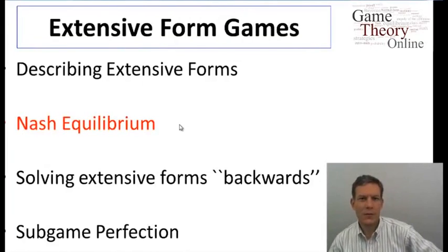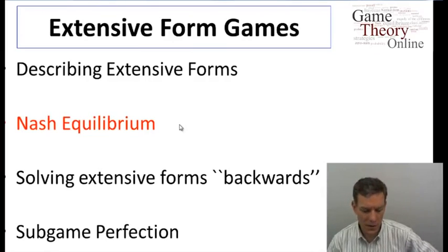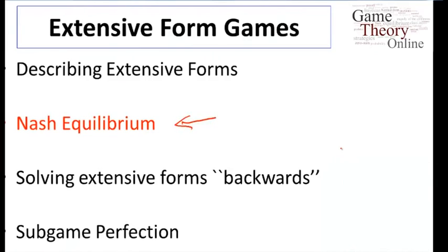Welcome back. We have some definitions of extensive form games in hand, and so now we can begin to analyze them. Let's start out by looking at Nash equilibrium. After that, we'll find that in the extensive form where there's timing, there will be other ways to solve a game beyond just looking for Nash equilibrium points. We'll then talk about solving games backwards, and ultimately we'll talk about subgame perfect equilibrium, which is a refinement that picks a subset of Nash equilibria.